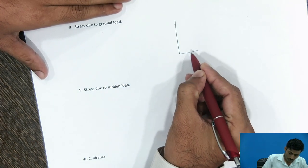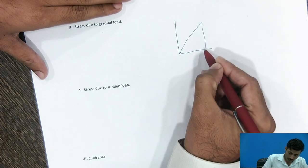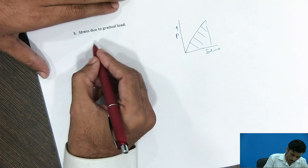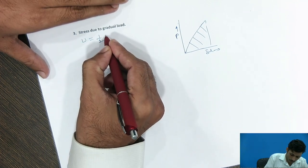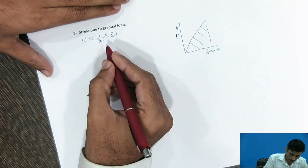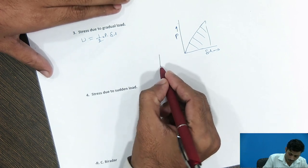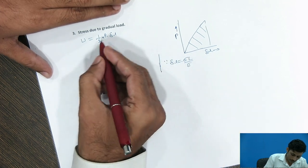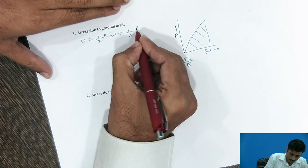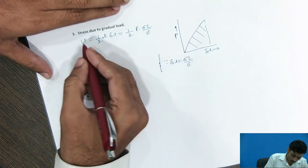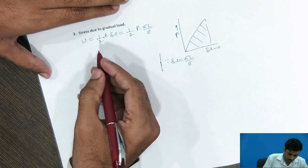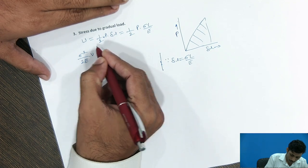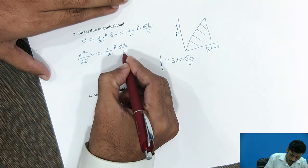So, again we can use the same area as we seen earlier. So, again we know that strain energy is nothing but half into P into delta L. This is an area under this curve. So, here replace the delta L term by sigma L by E. And I can replace that term by P into sigma L by E. And also put this U value as we derived in earlier derivation. That as sigma square by 2E into volume is nothing but half into P into sigma L by E.